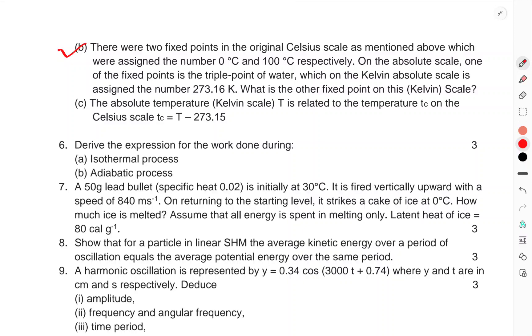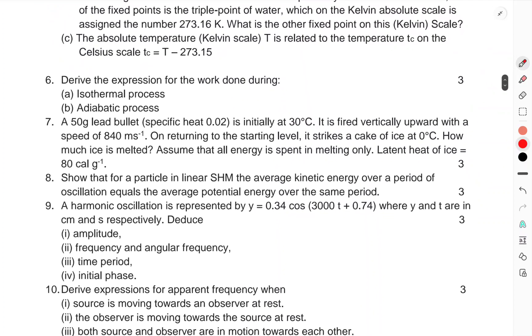One of the fixed points is the triple point of water, which on the Kelvin absolute scale is assigned the number 273.16 K. What is the other fixed point on this Kelvin scale? (c) The absolute temperature Kelvin scale T is related to the temperature TC on the Celsius scale: T = TC + 273.15.